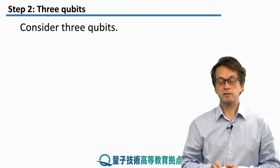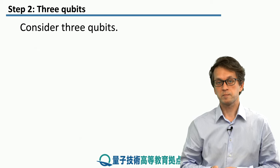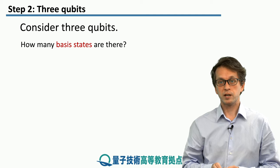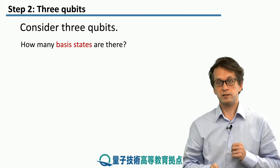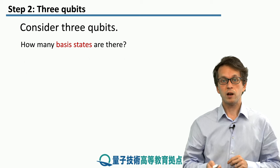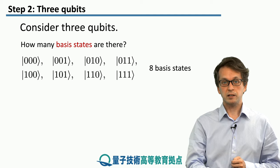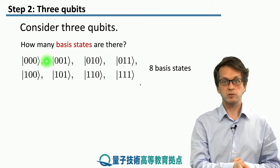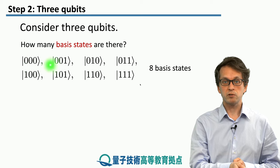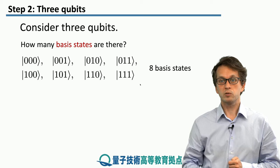Let's consider just three qubits as starters. How many basis states are there? We saw that for the case of two qubits there are four basis states: 00, 01, 10, 11. You can guess that for the case of three qubits there are eight basis states, given by all these possibilities: 000, 001, and so on all the way to 111.